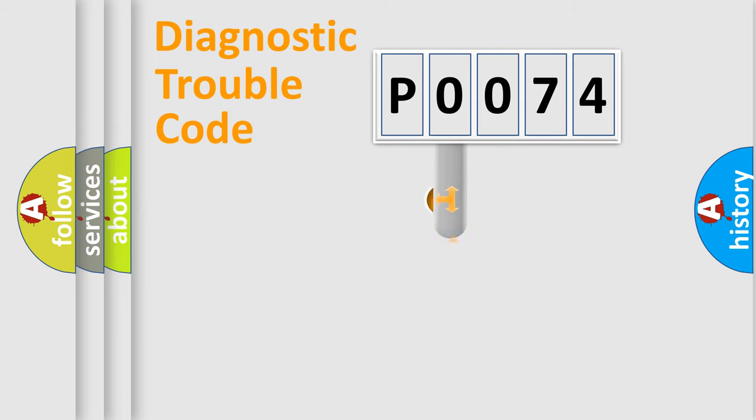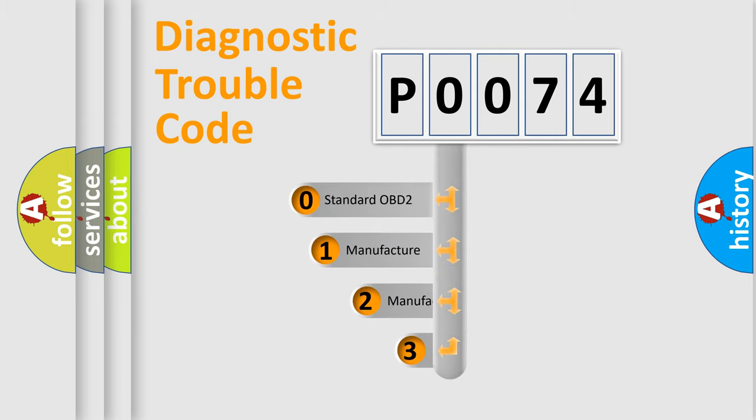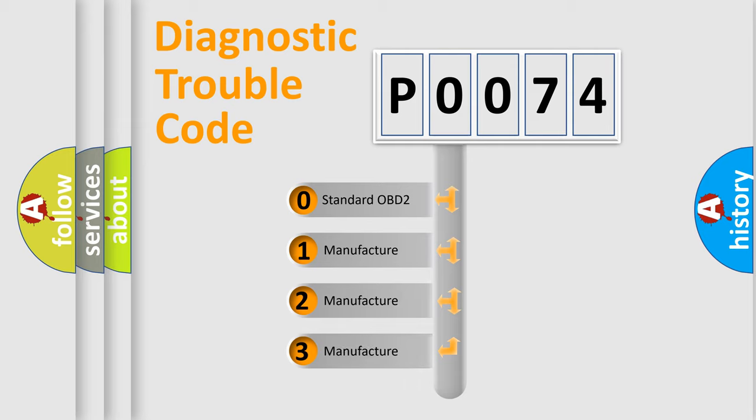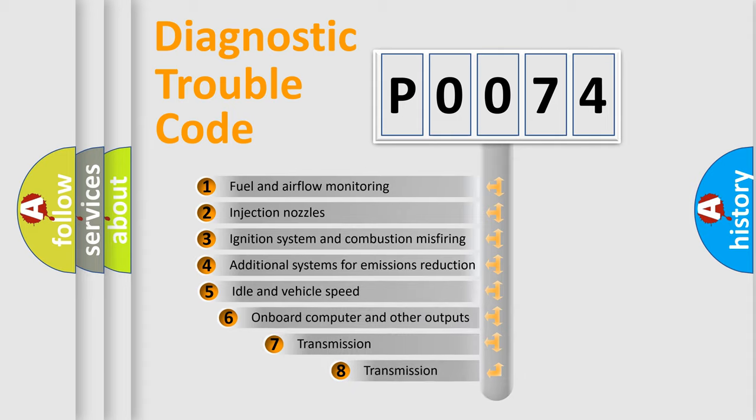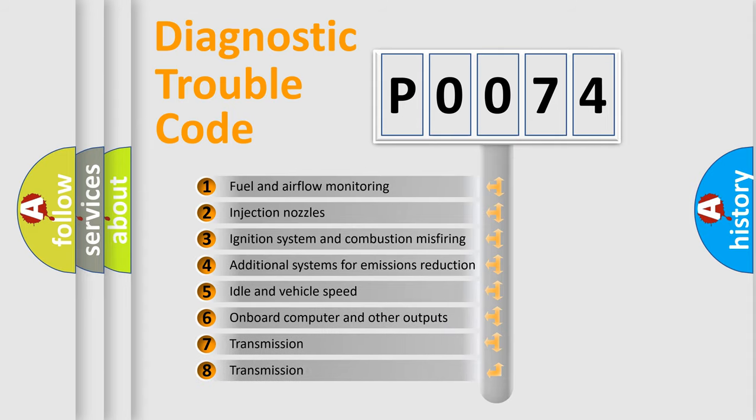This distribution is defined in the first character code. If the second character is expressed as zero, it is a standardized error. In the case of numbers 1, 2, or 3, it is a more specific expression of the car-specific error.